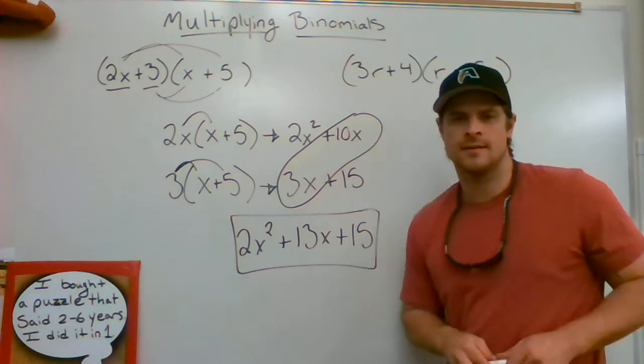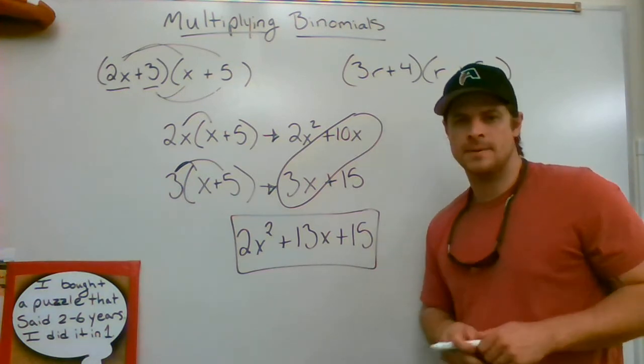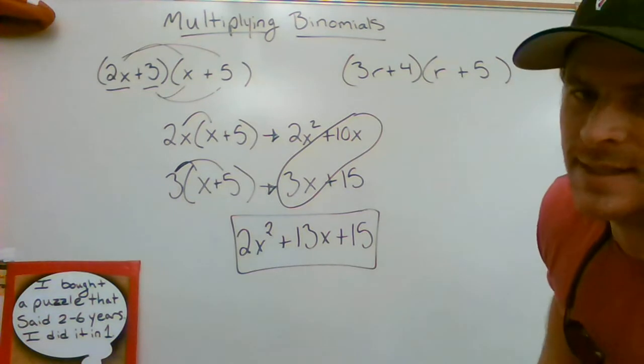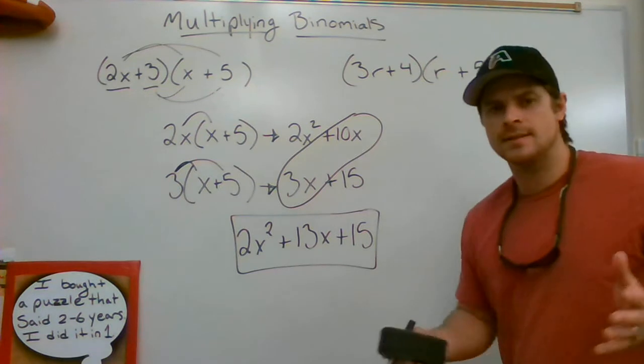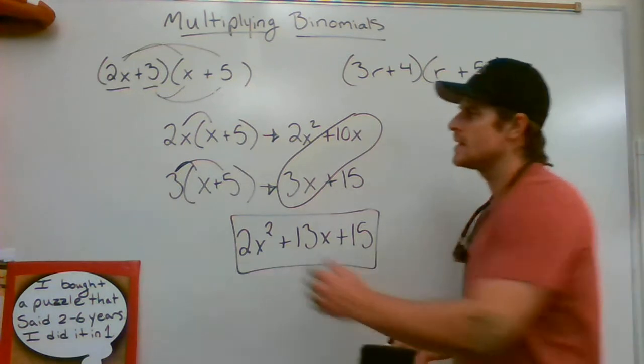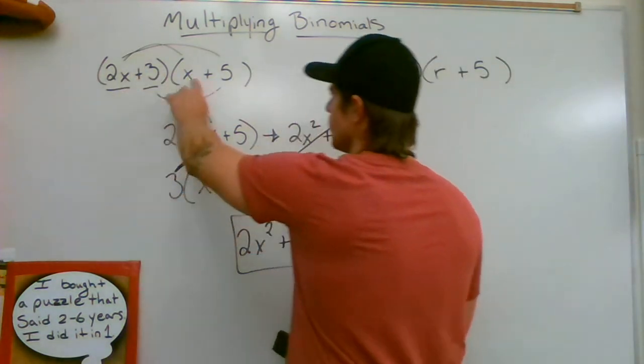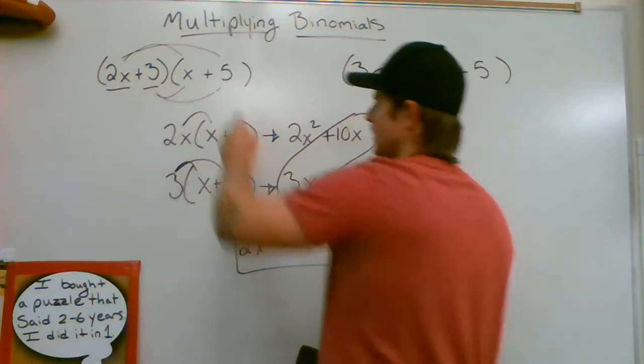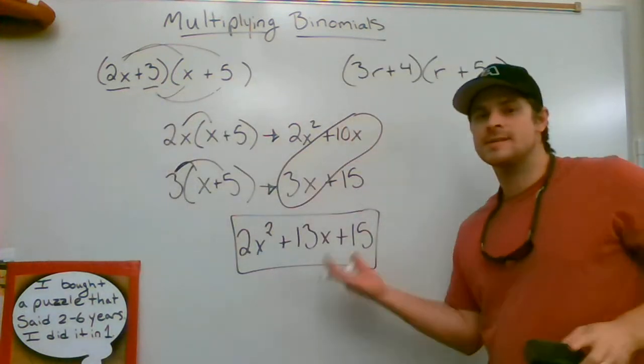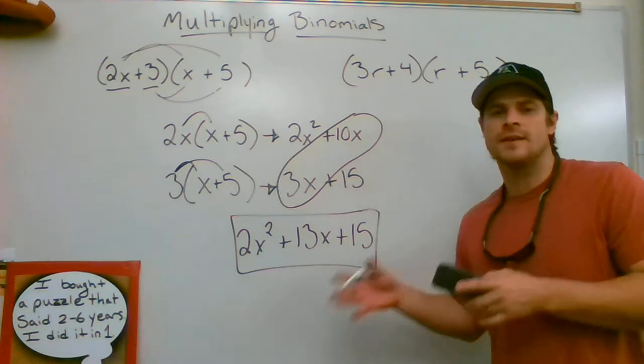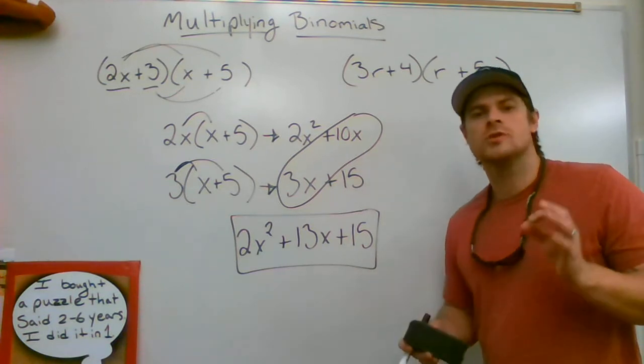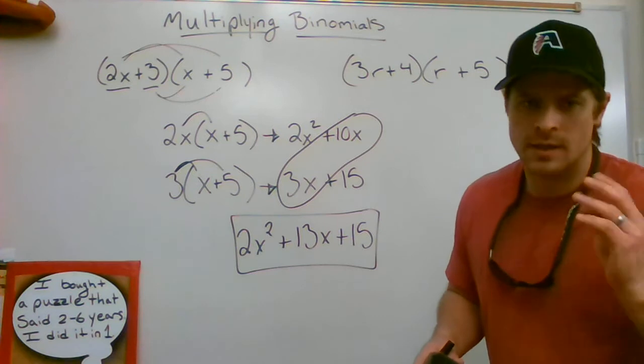I'm going to do it again on this other problem once I erase this. But basically, the big takeaway is that we want to distribute this to both parts and this to both parts. This is going to get you the same exact result as the FOIL method you saw in my previous video—it's just a different way of going about it. Choose the method that makes the most sense to you and go with it.